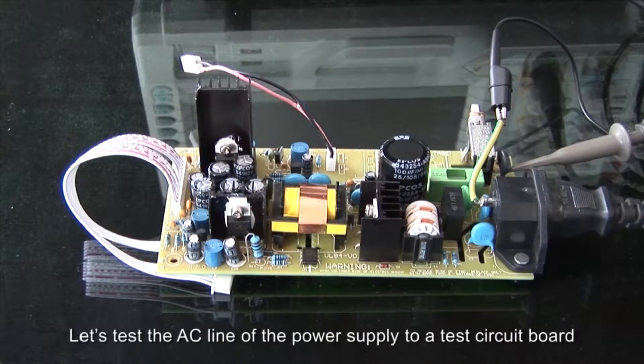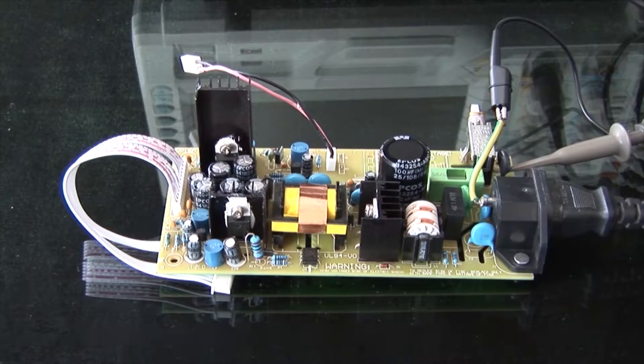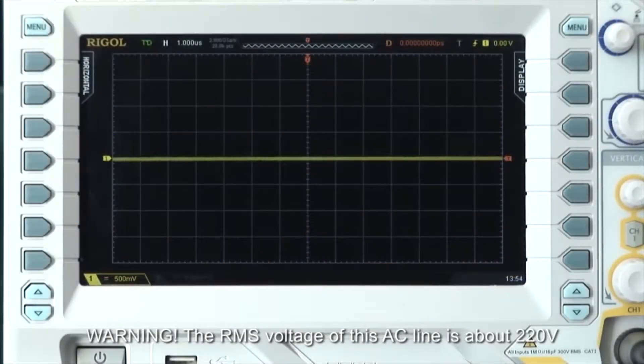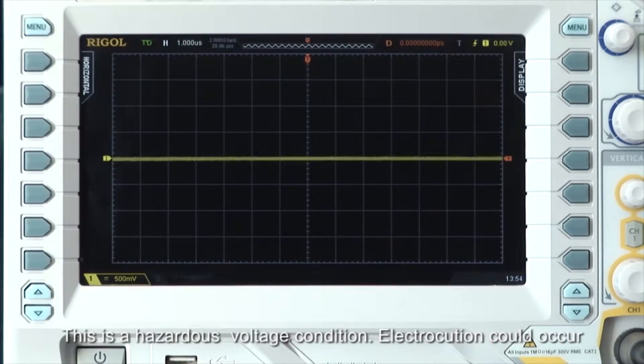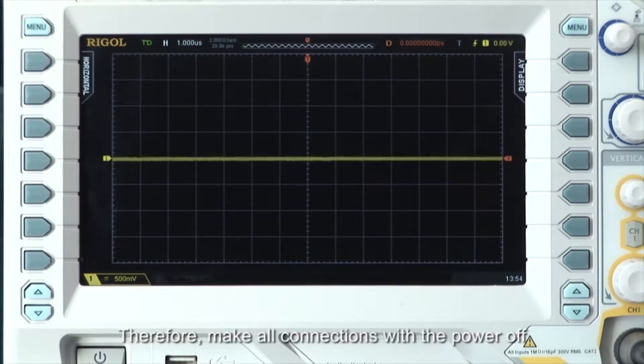Let's test the AC line of the power supply to a test circuit board. The RMS voltage of this AC line is about 220 volts. This is a hazardous voltage condition and electrocution could occur. Therefore, make all connections with the power off.